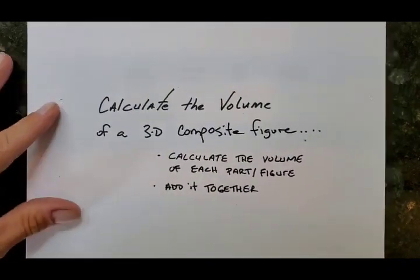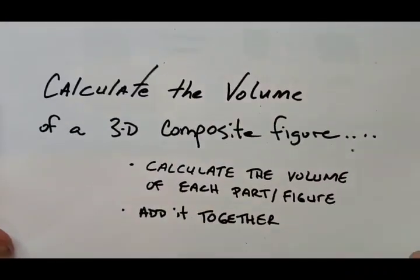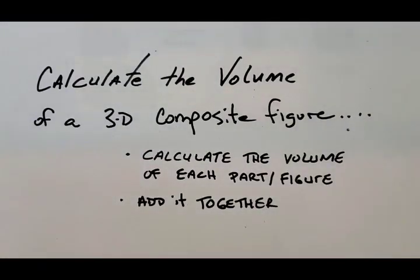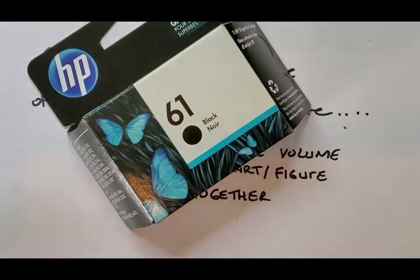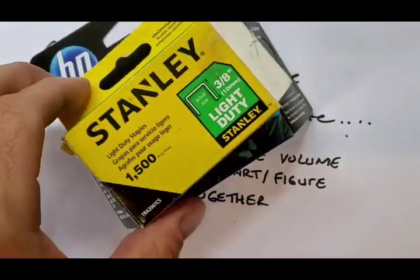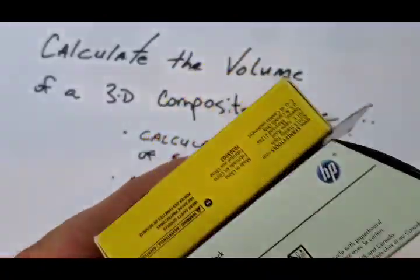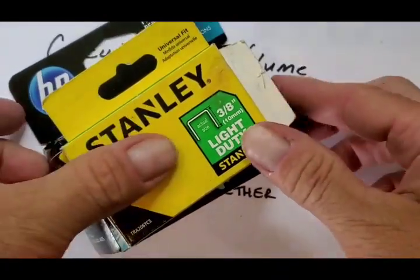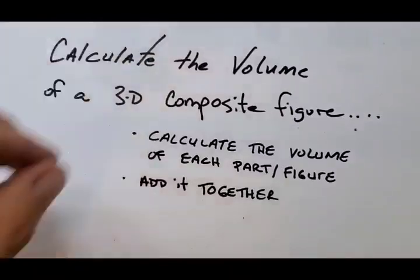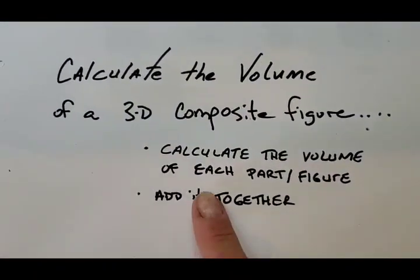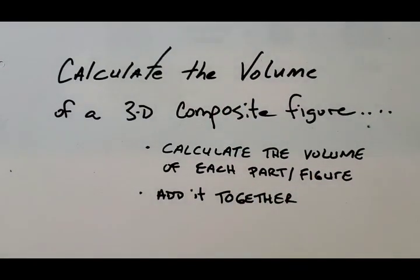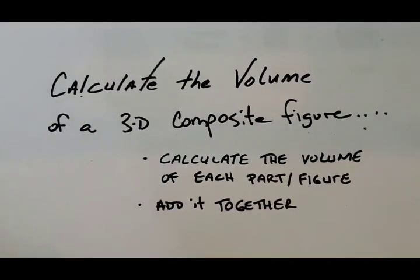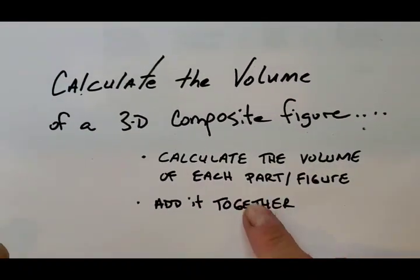The idea today is we're going to calculate the volume — the amount of space within these three-dimensional figures. Often, if we know the volume of one part and we put another part on top of it and find the volume of both added together, that's their total combined volume. We're going to calculate the volume of each part of a composite figure separately, and then total it — add it together.